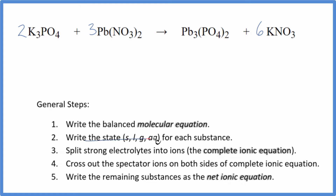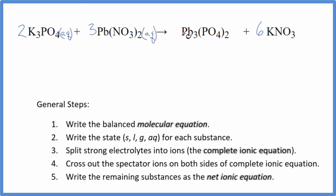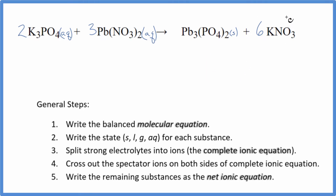Next, we need to write the states for each substance. Potassium compounds are very soluble. Even though phosphate compounds in general aren't, potassium phosphate, sodium phosphate, and ammonium phosphate are all very soluble. Most other phosphates are not. Nitrates are very soluble. The product here is lead-2 phosphate, which is insoluble — it's going to be a solid and fall to the bottom as a precipitate. This is a precipitation reaction. Nitrates and potassium compounds are very soluble, so they're aqueous.